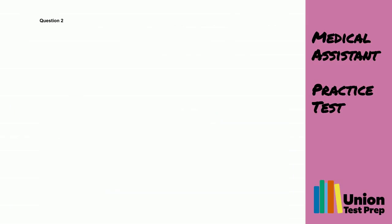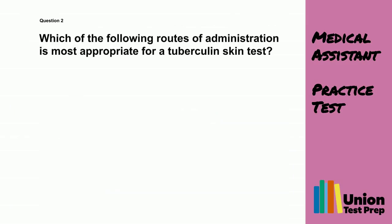Question 2. Which of the following routes of administration is most appropriate for a tuberculin skin test? A. Intramuscular. B. Subcutaneous. C. Intradermal.